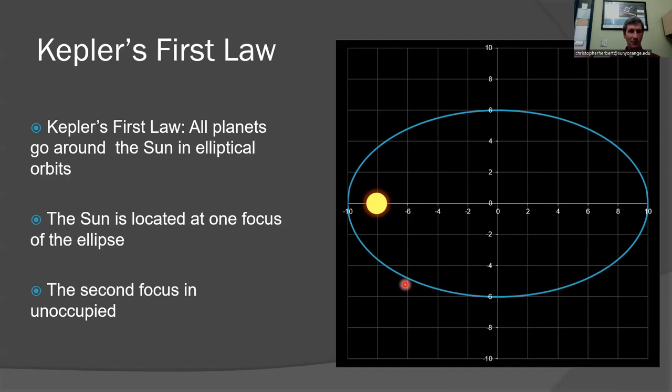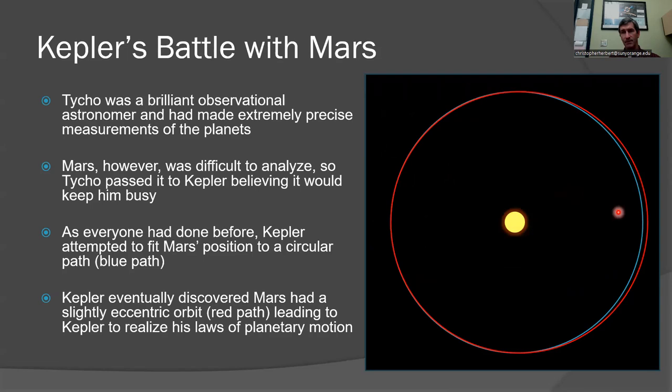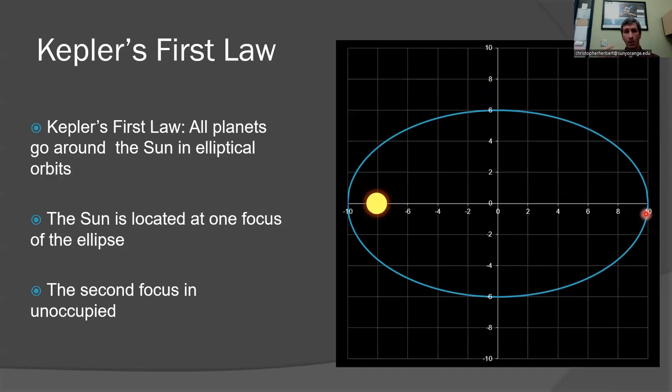Foci is plural for focus. The second focus is unoccupied. This right here is a great exaggeration. Most planets, the most elliptical of all orbits for the planets is probably Mercury. But if we exaggerate it, planets go around the sun with these elliptical orbits. We now know that asteroids and comets also have these elliptical orbits where the sun sits at one of the foci.